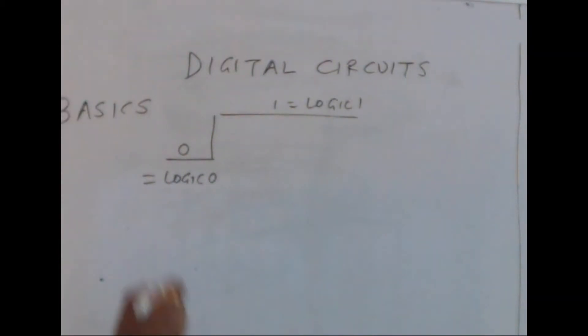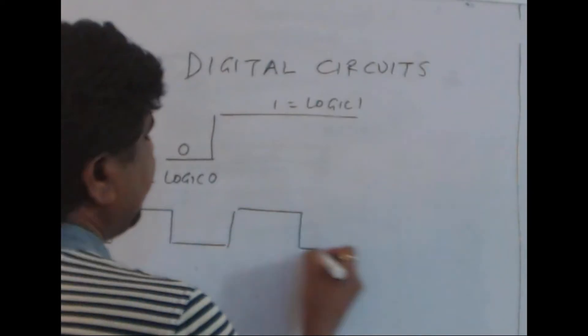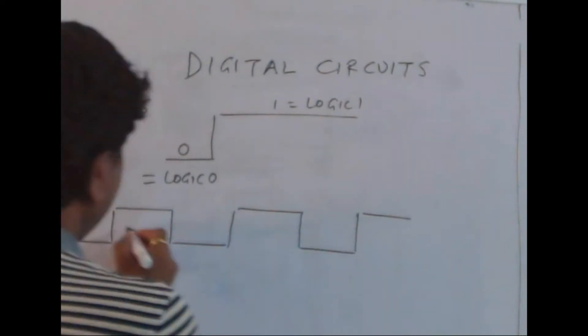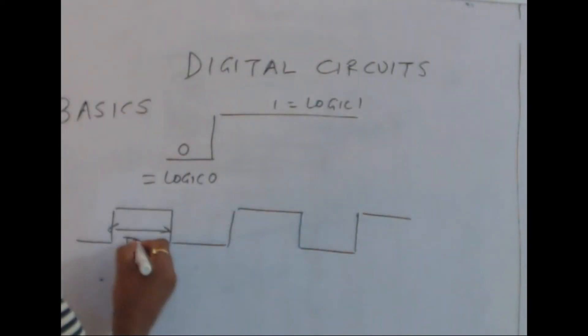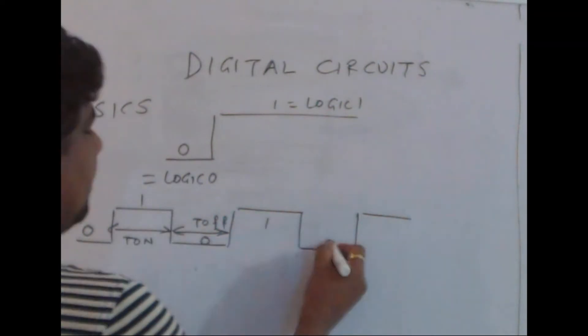If we consider a square wave, which has on time and off time - this is t on, this is t off - I will get a toggle kind of behavior: 0, 1, 0, 1, 0, 1.